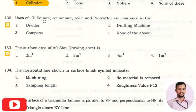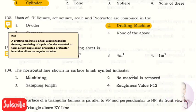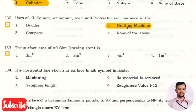The next question is: the use of T square, Z square, scale, and protractor are combined in? The right option is drafting machine. So a drafting machine is a tool used in technical drawing consisting of a pair of scales mounted to form a right angle on an articulated protractor head and allows angular rotation. That is a drafting machine. So you are more familiar with the drafter - generally we call it as a drafter, that is drafting machine.